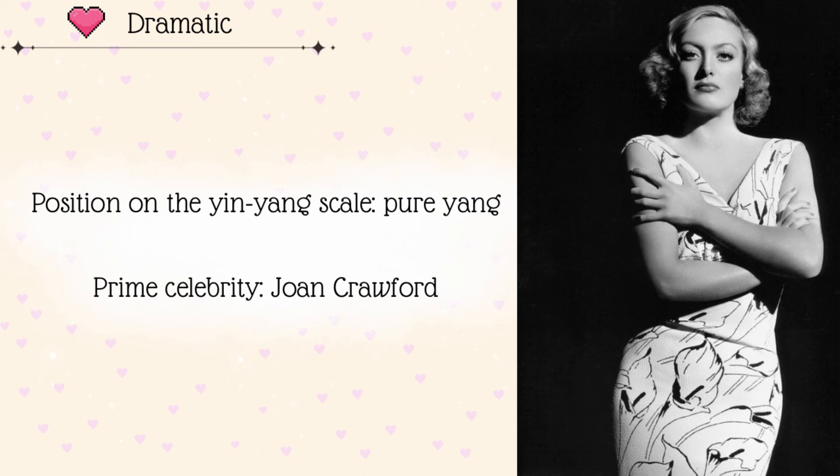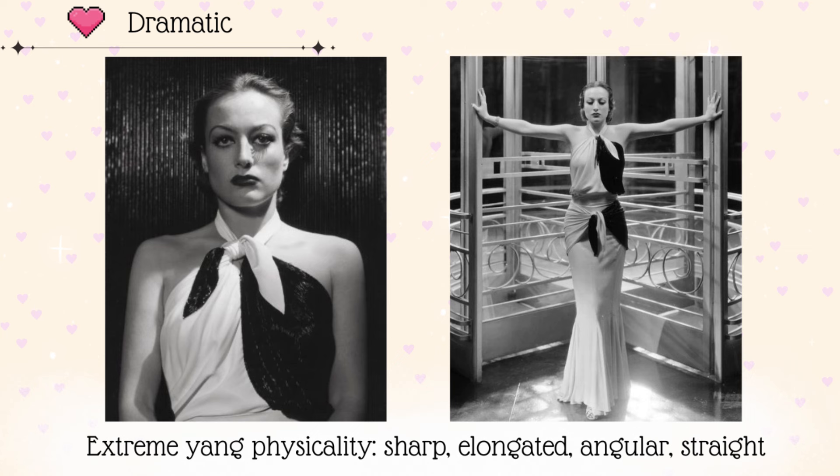The prime celebrity we have here is Joan Crawford. Each image identity gets one celebrity that is basically the poster child of that image ID — someone who embodies perfectly the body, the essence, and the star image of that ID. Every celebrity you are going to see in this video is a verified Dramatic. In terms of physicality, pure Yang is sharp, elongated, angular, and straight. Joan Crawford is a perfect example — you can see it in both her facial features and her body, which mostly consists of sharp angles and long straight lines.